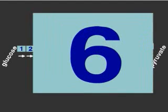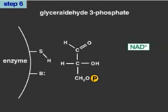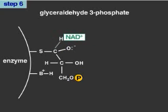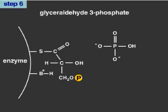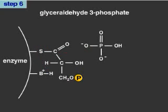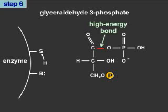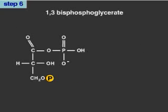In step 6, the enzyme glyceraldehyde-3-phosphate dehydrogenase uses NAD to oxidize glyceraldehyde-3-phosphate. The resulting molecule is connected to the enzyme by a high-energy thioester bond. A molecule of inorganic phosphate displaces the high-energy thioester bond, forming a high-energy acyl-anhydride bond. The resulting molecule is 1,3-bisphosphoglycerate.